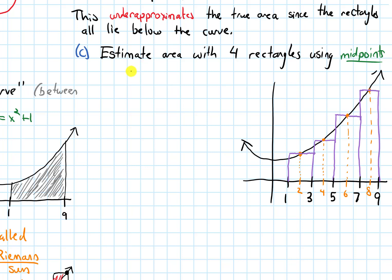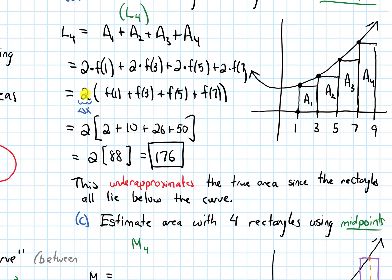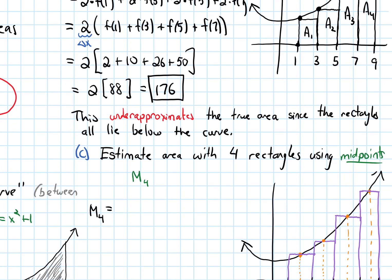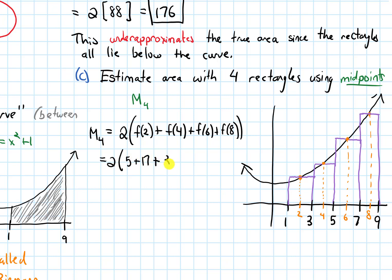M4 equals 2 — that's the base factored out — times f of 2 plus f of 4 plus f of 6 plus f of 8. Working these out: 2 times the quantity 5 plus 17 plus 37 plus 65 equals 2 times 124, which is 248.